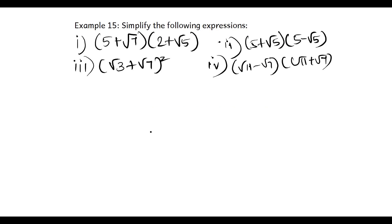Example number 15: Simplify the following expressions. Part i: 5 plus root 7 into 2 plus root 5. If I multiply this, I will get 10 plus 5 into root 5 plus 2 into root 7 plus root 35.